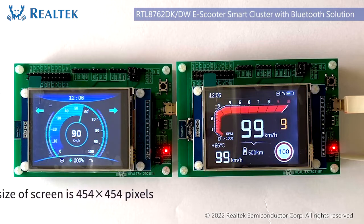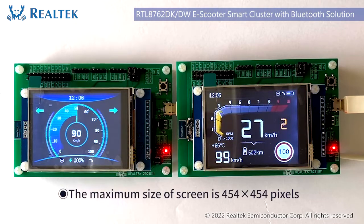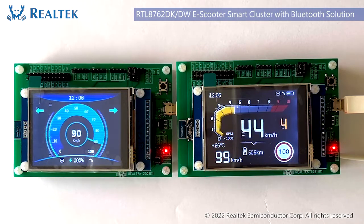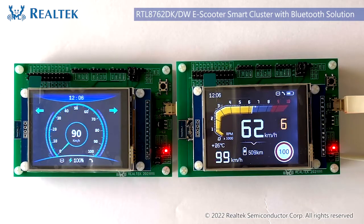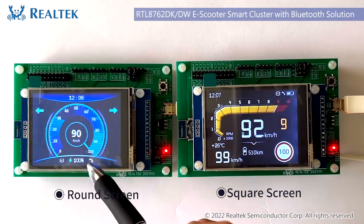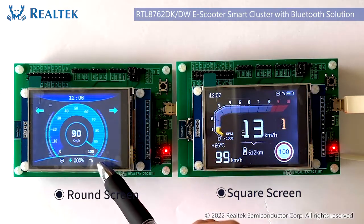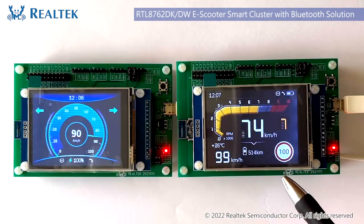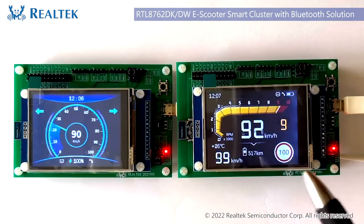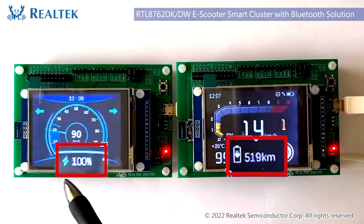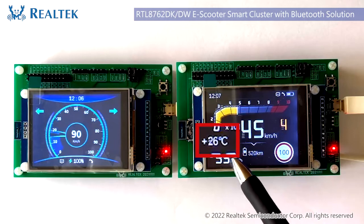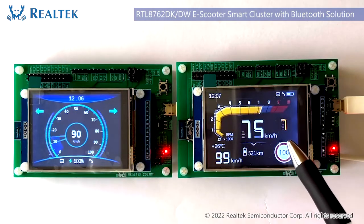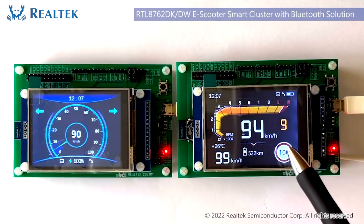The maximum screen size supported is 454 x 454 pixels. We will take two 320 x 280 screens to show you the effects — the left is a round screen and the right is a square screen. It achieves dynamic display of parameters including real-time speed, battery capacity, temperature, gear, and other common cluster parameters. You can see the effect of the dynamic screen.